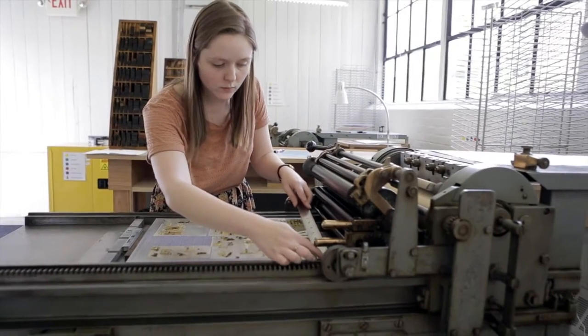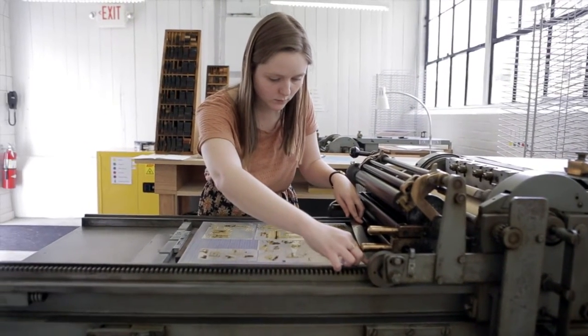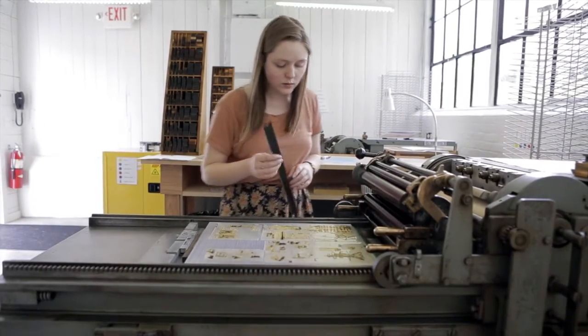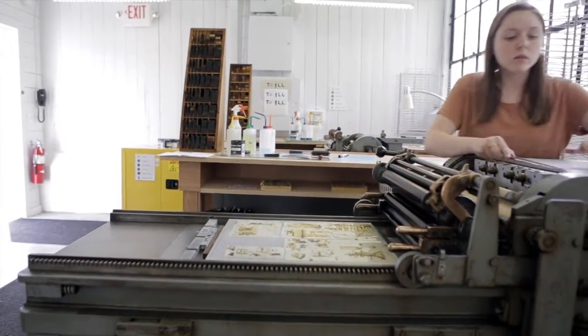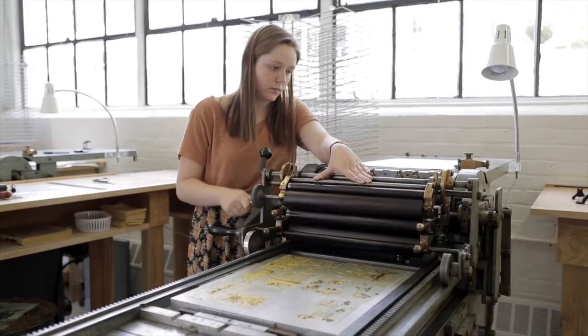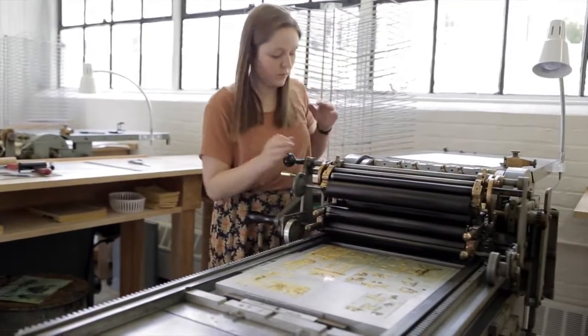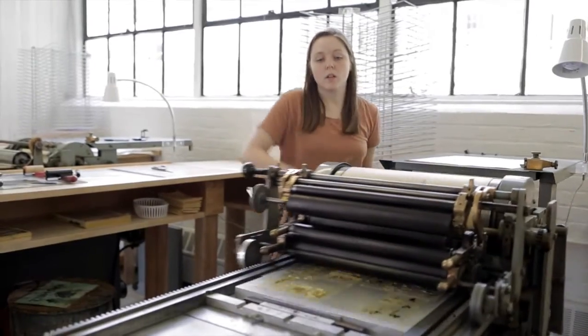Essentially we're talking about making text and making objects that are meant to be looked at and read. When you're designing a book, when you're making something that's meant to be read, legibility is probably foremost. You have to be able to read it and look at it.